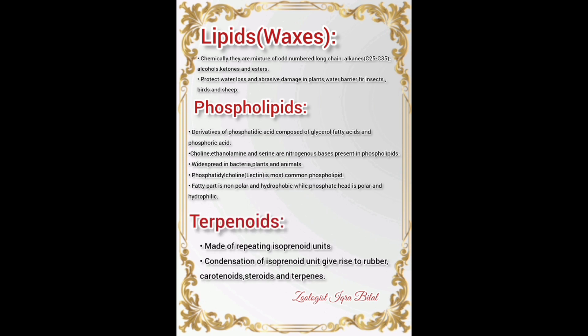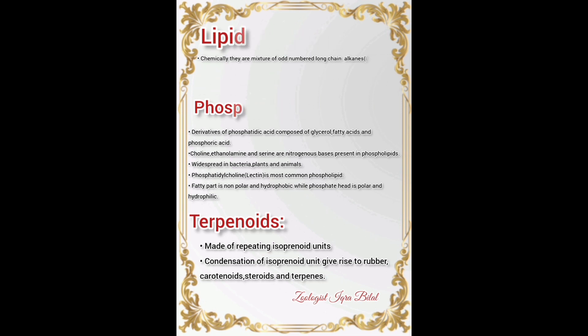Terpenoids are made of repeating isoprene units. Condensation of isoprene units gives rise to rubber, carotenoids, steroids, and terpenes.